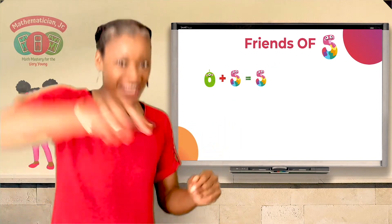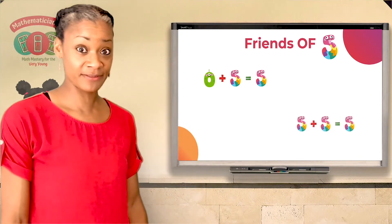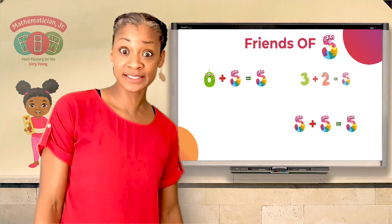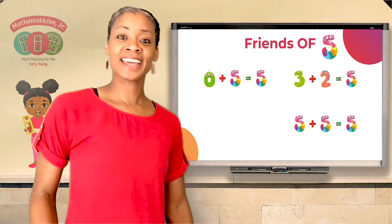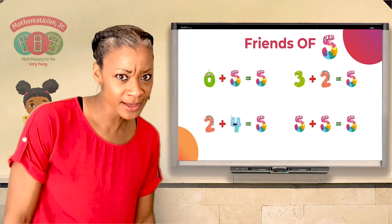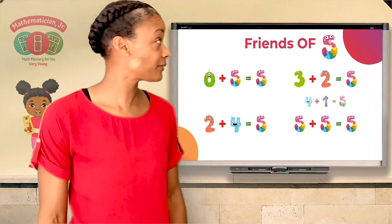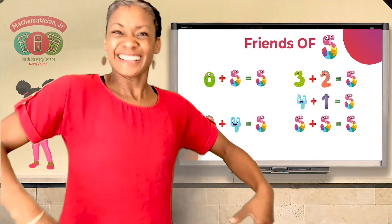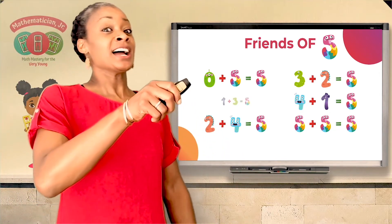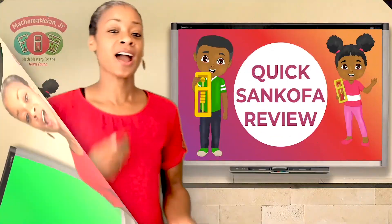Zero and five — are they friends of five? Check, good job! What about five and five — are they friends of five? Next: three and two — are those friends of five? Check! Two and four — are those friends of five? Four and one — friends of five? Check, good job! One and three — are those friends of five? I tricked you — did you look at me expecting the answer?